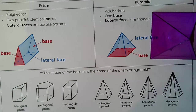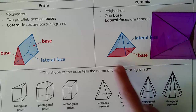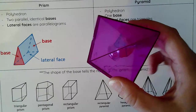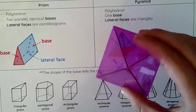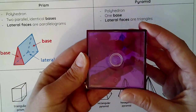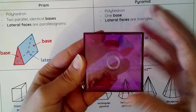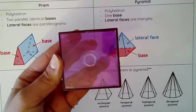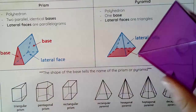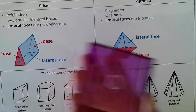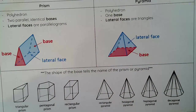Now let's look at some pyramids. This 3D figure has only one base, and opposite of that base is the vertex where all the lateral faces meet. Looking at the base to determine the name, the base is a square — or more generally, a rectangle — so this would be called a rectangular pyramid, sometimes referred to as a square pyramid.